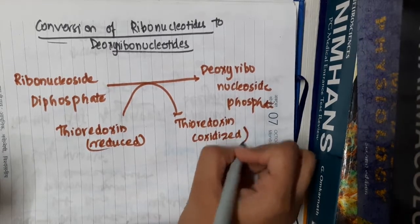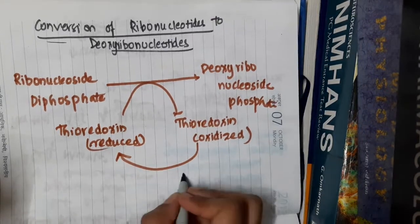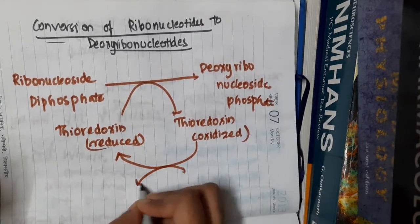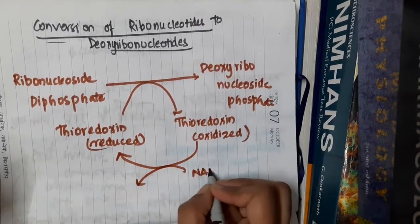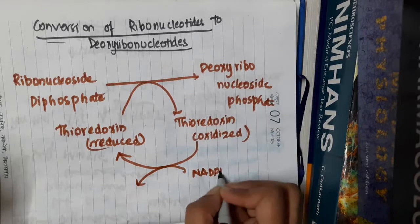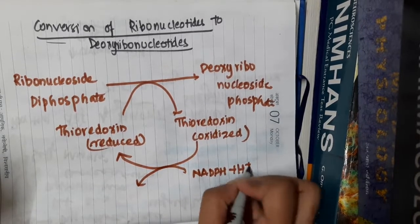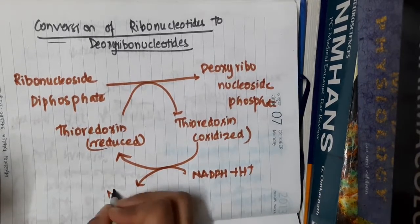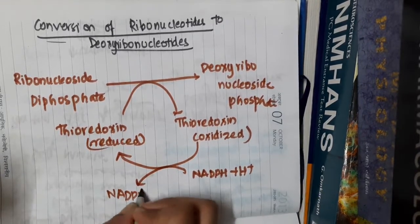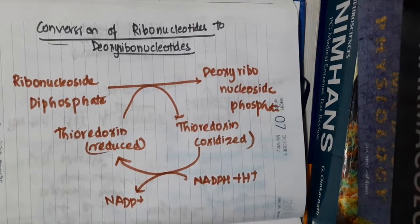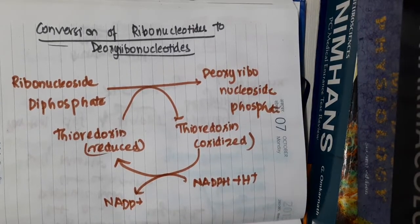This oxidized thioredoxin is then converted back to reduced thioredoxin. During this process, NADPH + H⁺ gets converted to NADP⁺.